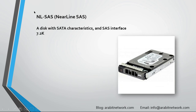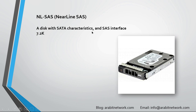We will also learn about another disk type: the near-line SAS disk. It's a disk that has the characteristics of SATA disks but comes with a SAS interface. Near-line SAS is a hard disk drive — it has mechanical moving parts. The SATA characteristic here is the huge capacity it can support: up to 14 terabytes per disk or even greater. With the SAS interface, it allows you to use it in storage systems that support only SAS disks.